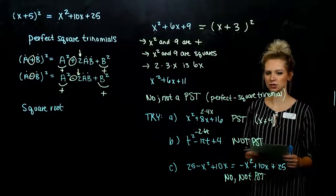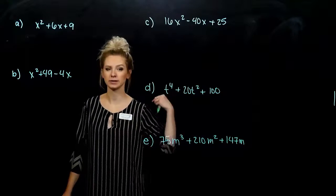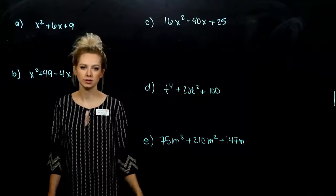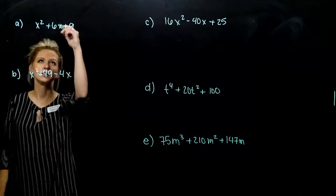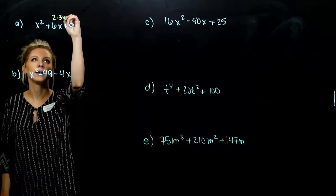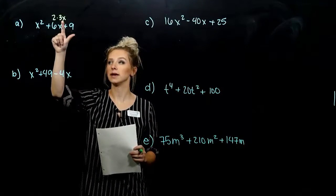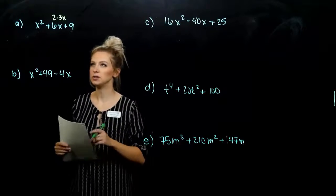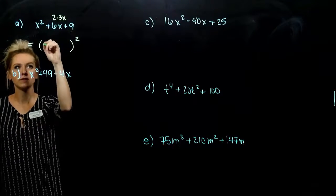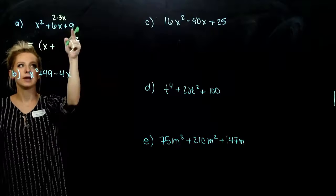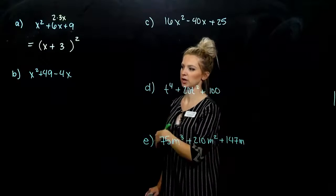We've got those foundations; we can check, and eventually we'll start working towards actually factoring those. In the first example, to check it's a perfect square trinomial: positive, positive. I could break up 6 into 2 times 3x. Is 3 the square root of 9? Yes. Is x the square root of x squared? Yes. So we know this is going to factor into the square root of the first, a positive sign in the middle, and the square root of the last. Done — saves a lot of time rather than guessing and checking.